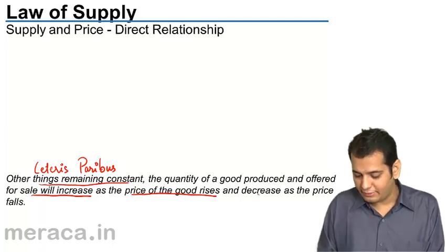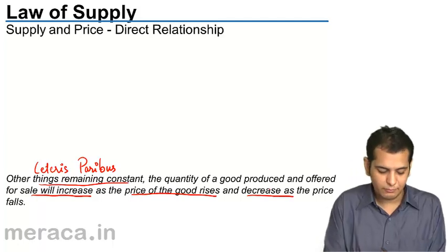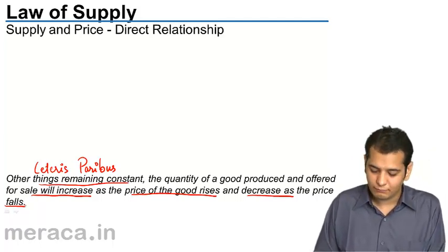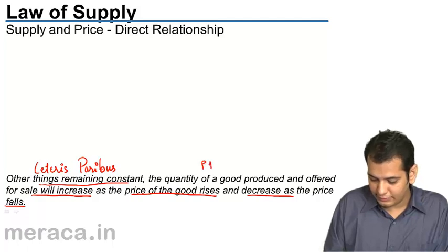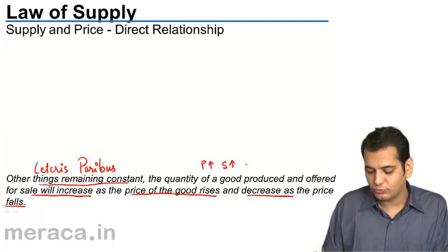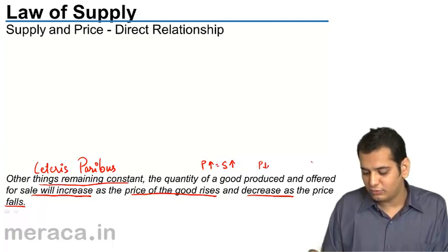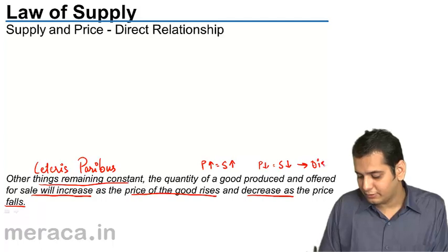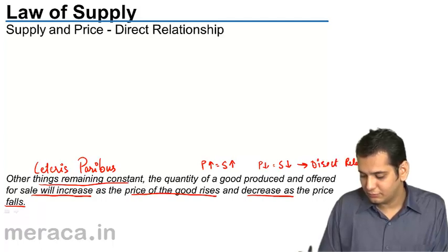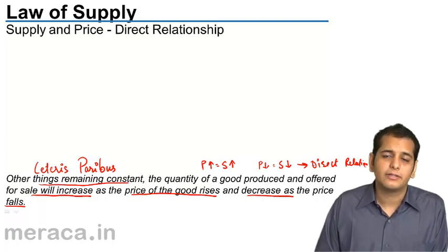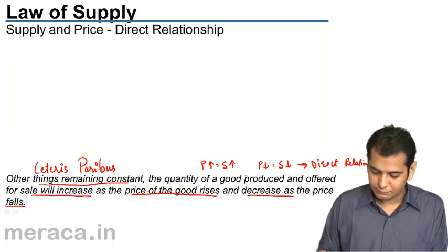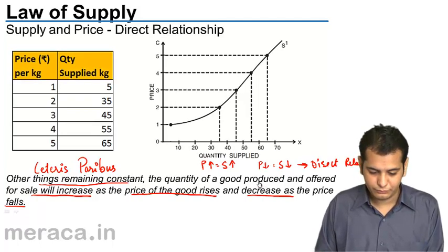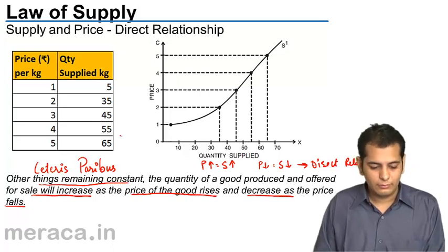The quantity supplied of a good will increase as the price is increasing, and it will decrease as the price falls. So when price increases, supply also increases; when price falls, supply also falls. We can say that there is a direct relation between price and supply.